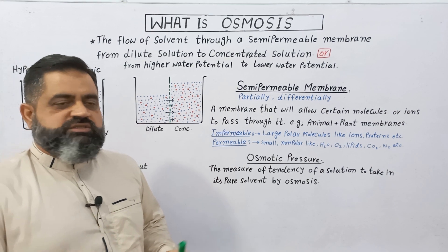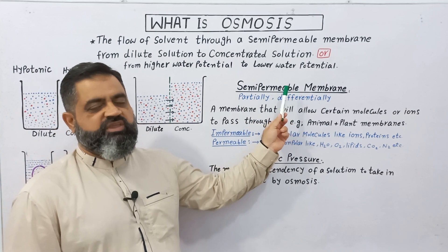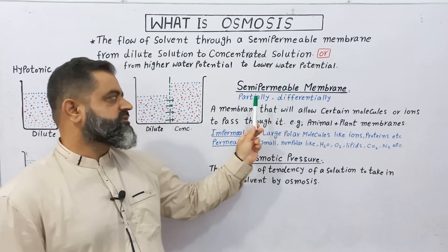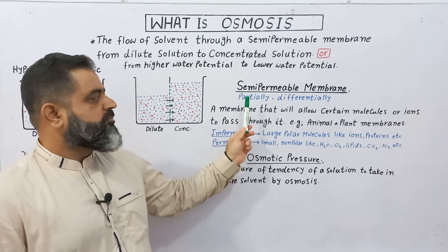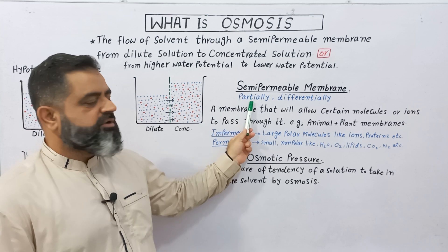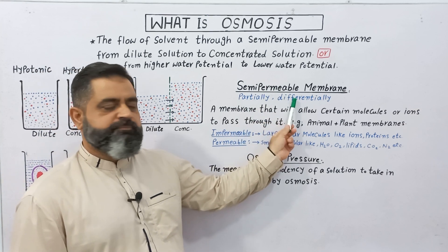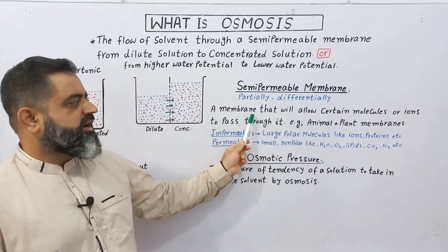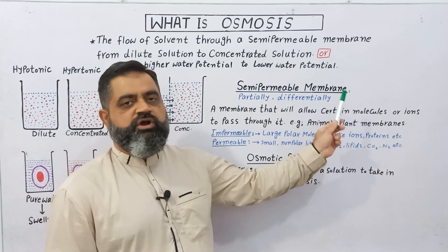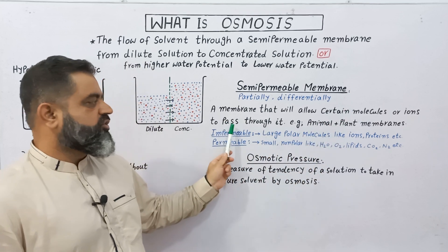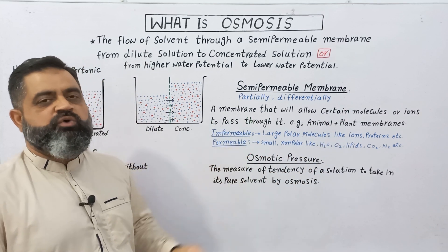Now we are going to discuss semi-permeable membrane. Semi-permeable membrane is also known as partially permeable membrane or differentially permeable membrane — a membrane that will allow certain molecules or ions to move across it or pass through it.